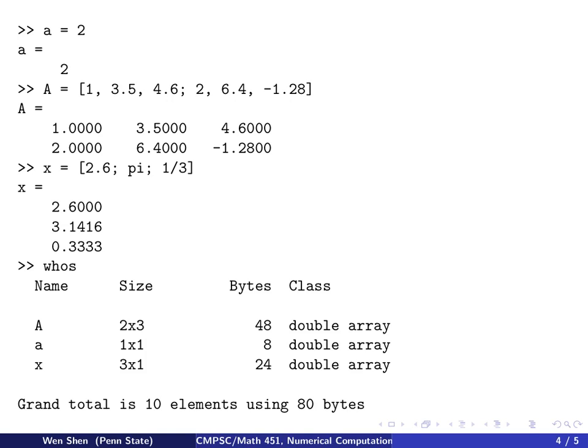And this command whos here would show you all the variables that you have defined so far that are active available in MATLAB right now. So here now we have three. We have A which is a matrix. It tells you the size. And the a is a number. You see it tells you the size is 1 times 1. And x is a vector. The size is 3 times 1.